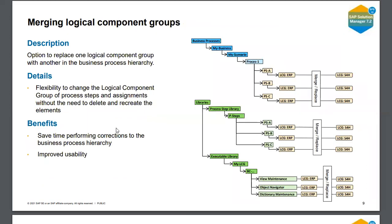The second most important thing SAP has released with SP12 is the merging of logical component groups. Earlier this was not possible, but now in SP12 SAP has released the ability to merge different logical component groups in a business process. Previously we had a different approach for this, but now it is available on the go — you can simply go and merge your logical component groups into one.